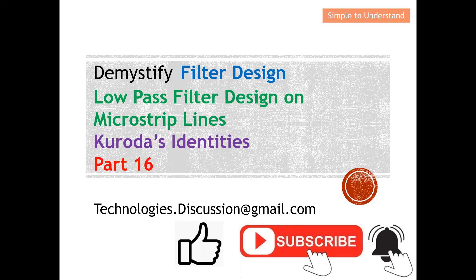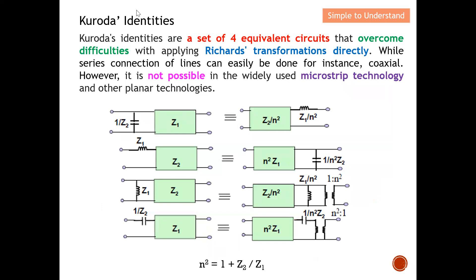Let's start by understanding what Kuroda's identity is. There are a set of four equivalent circuits. They are mainly used to overcome difficulties when we apply Richard's transformation directly. Kuroda's identity works together with Richard's transformation. We are able to transform series connections into parallel connections so that they can be easily implemented on a microstrip line. That is, in short, why we need Kuroda's identity and Richard's transformation — the key objective is to convert all the series connected lines into parallel connected lines.